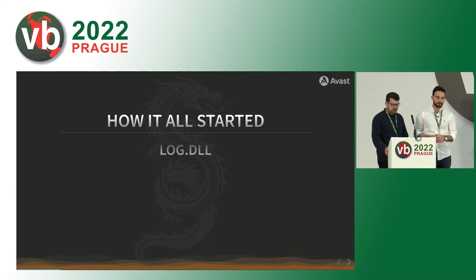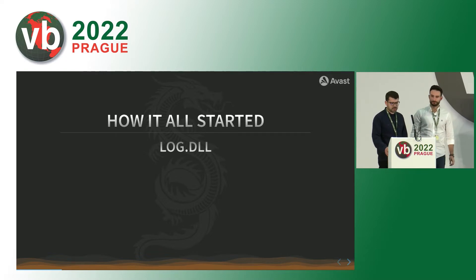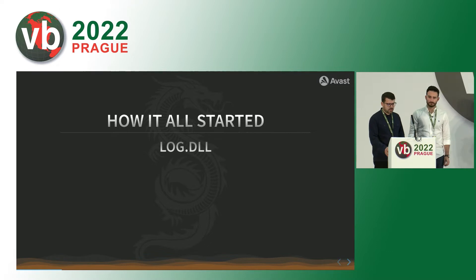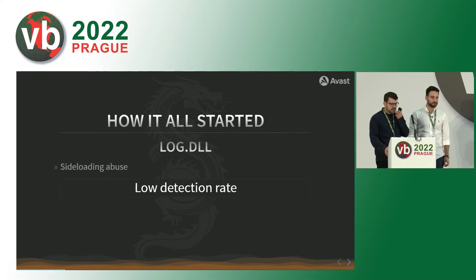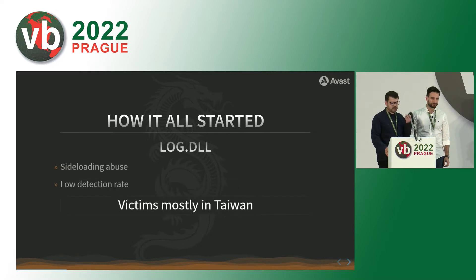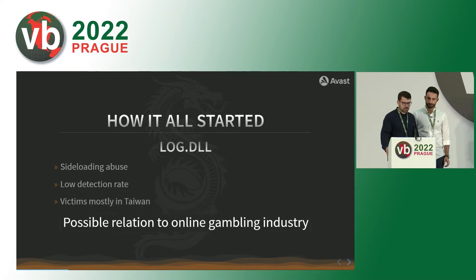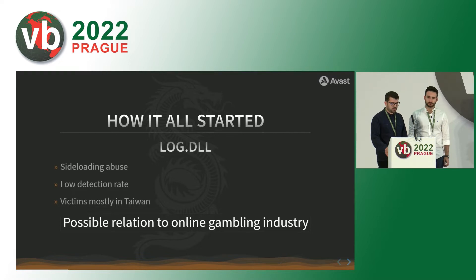Let's see how it all started. While hunting for samples from a different campaign, we came across this binary, which was a log DLL. An attacker abused side-loading to load this DLL, and this binary had a really low detection rate at that time. Most of the victims were in Taiwan and, according to some additional telemetry, they were most likely related to the online gambling industry, which is known to be targeted by Chinese APT groups.